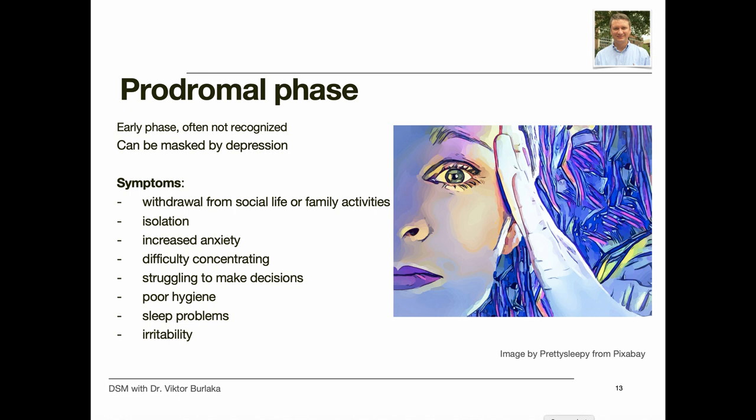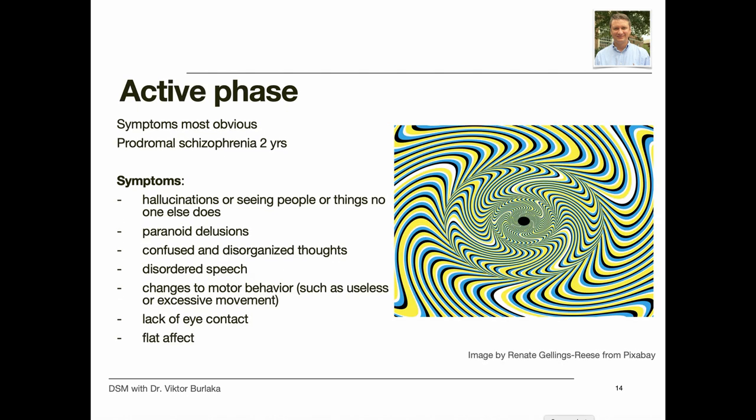Symptoms in the prodromal phase may include withdrawal from social life or family activities, isolation, increased anxiety, difficulty concentrating or paying attention, and lack of motivation. People may also struggle to make decisions, neglect personal hygiene, have sleep disturbances, and increased irritability. Research suggests that by the time a person reaches the active stage, they may have been showing prodromal symptoms for approximately two years.